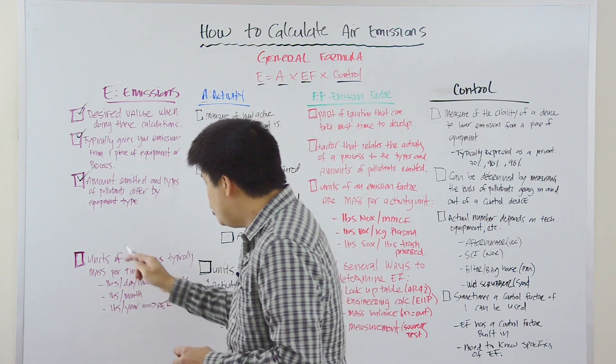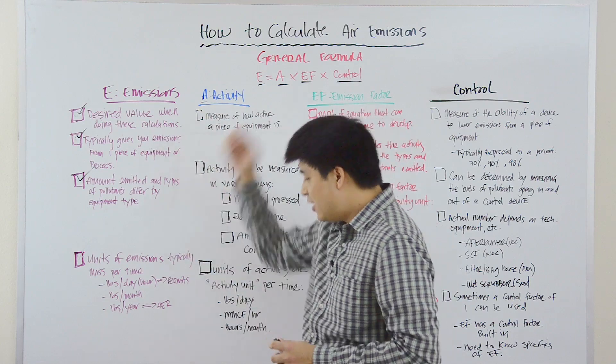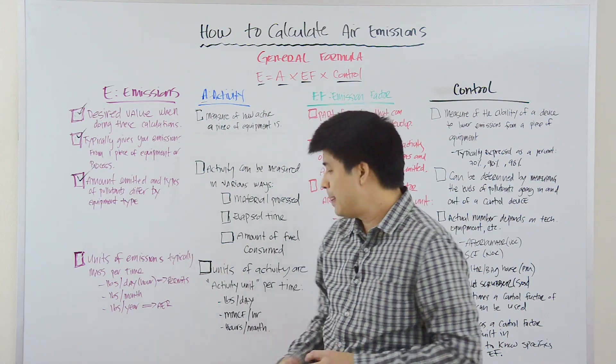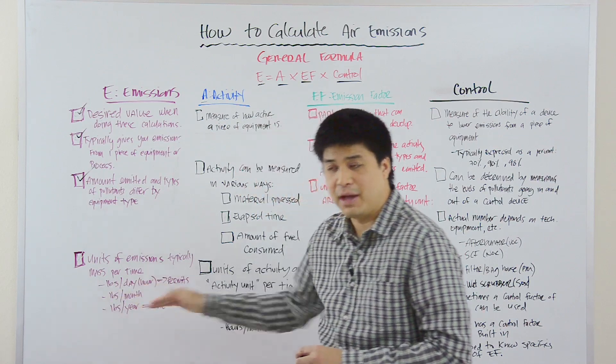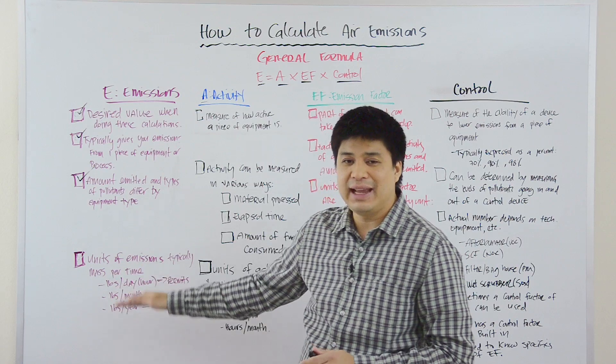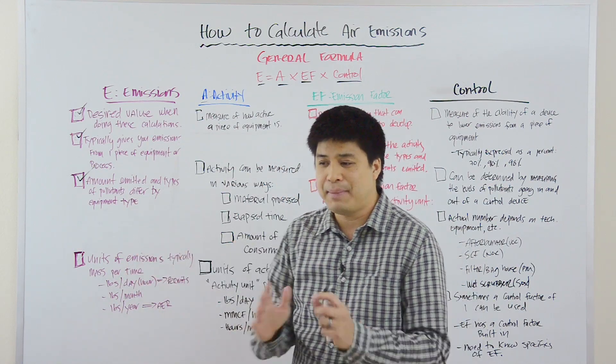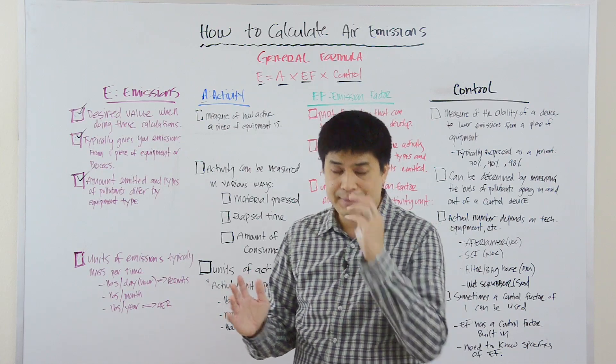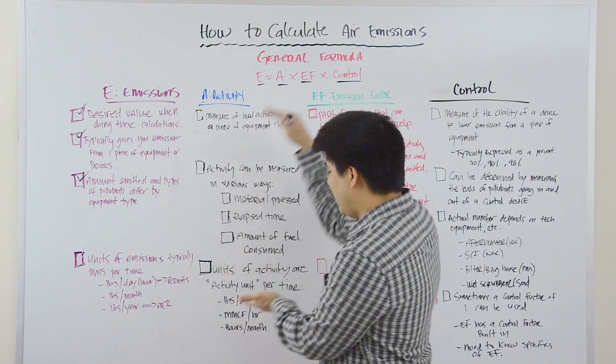Now, the units of E are typically mass per time. And that could be pounds per day, pounds per hour, pounds per month, pounds per year. The per time or the denominator of the emission or the E value will depend on the sort of length or duration that you're looking at. And that's actually tied to A.